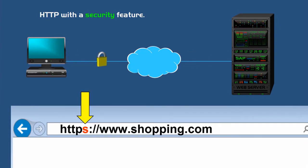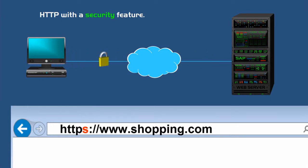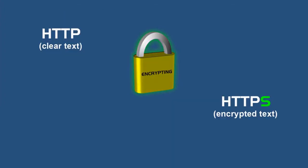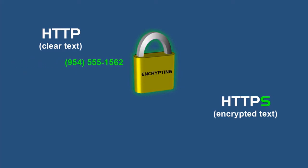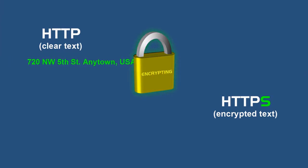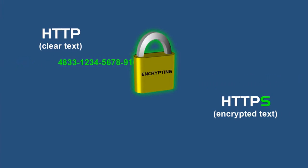That S indicates that you are now using secure HTTP and have entered a secure website where sensitive data is going to be passed and protected. In addition to the S being added, a lot of web browsers will also show a padlock symbol in the address bar to indicate that secure HTTP is being used. So by using secure HTTP, all the data — including anything that you type — is no longer sent in clear text. It's scrambled in an unreadable form as it travels across the internet. So if a hacker were to try and steal your information, he would get a bunch of meaningless data because the data is encrypted and he would not be able to crack the encryption to unscramble it.